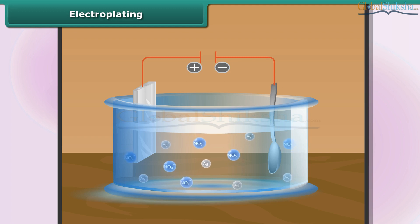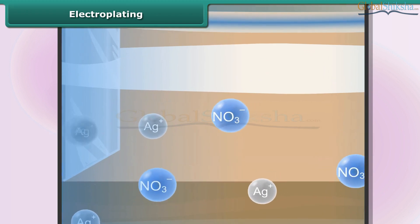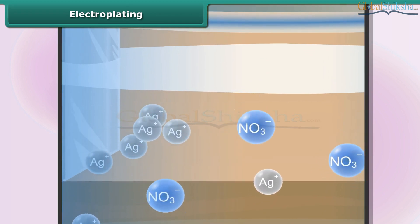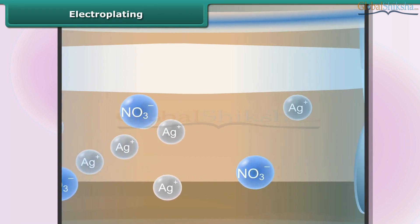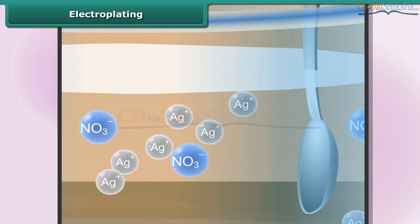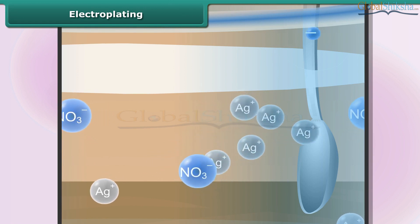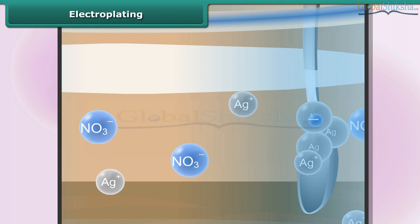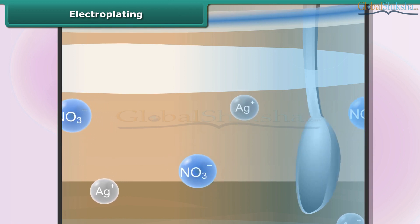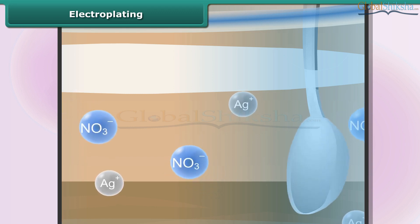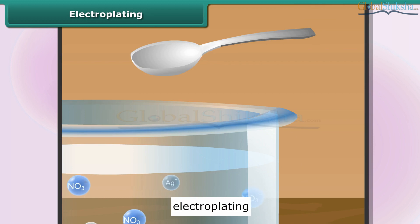The electrolyte is a solution of salt that contains the ions of the anode metal, for example silver nitrate. As soon as electric current starts flowing through the solution, electrons begin to escape from the silver anode, resulting in the formation of positively charged ions which separate from the anode and pass into the solution. They migrate towards the cathode, attracted by its negative charge. When they reach the cathode, they accept electrons from it and change into silver atoms, which deposit onto the cathode in the form of a thin metallic layer.